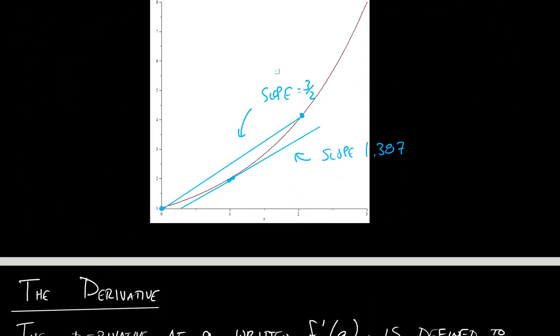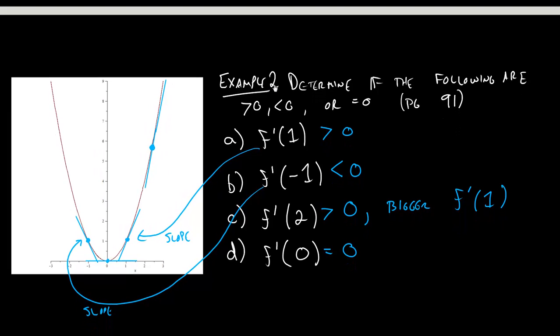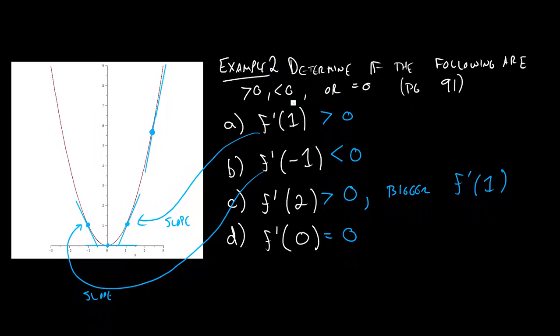We've also investigated the idea of a derivative using a graph. So when we're trying to find the derivative at one with a graph, we just draw that tangent line and it's the slope of the graph.